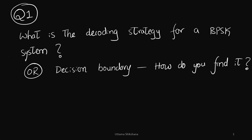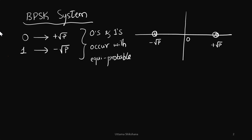Basically, the question is: in a BPSK system where zero is mapped to plus square root of P and one is mapped to minus square root of P, and both zeros and ones occur with equal probability (equiprobable), how do you find the decision boundary? For this constellation, some of you can already guess the answer.